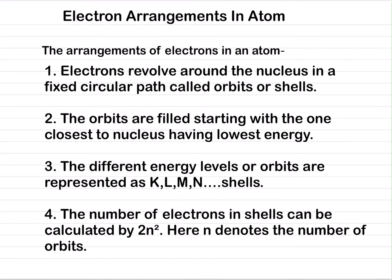Niels Bohr along with Rutherford worked together and gave a theory of how electrons are arranged in atoms. A simplified version of their theory: Number 1 — electrons revolve around the nucleus in fixed circular paths called orbits or shells. They are also called energy levels.